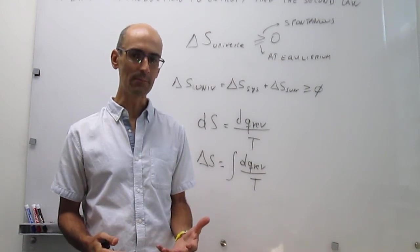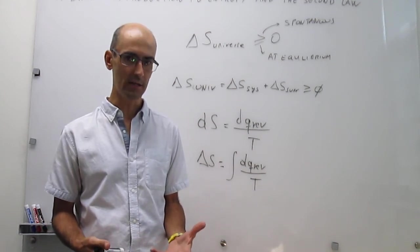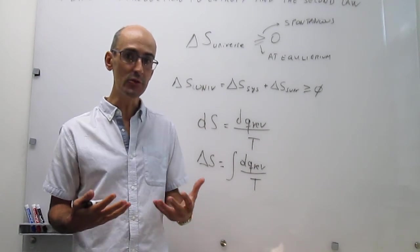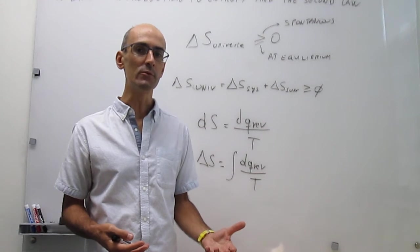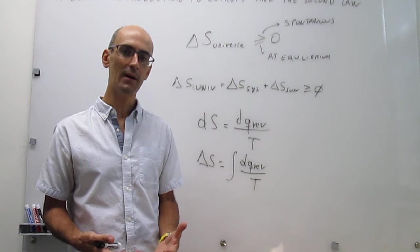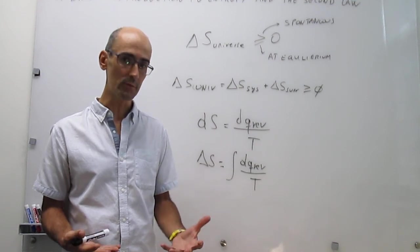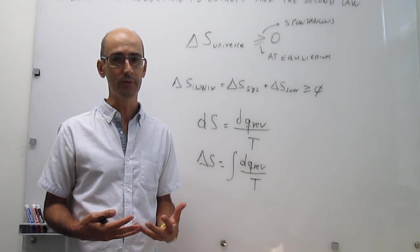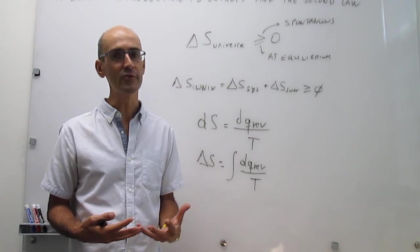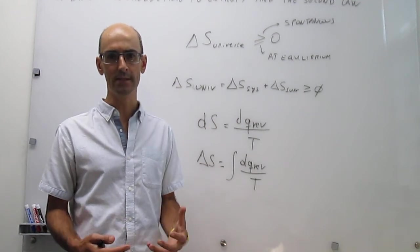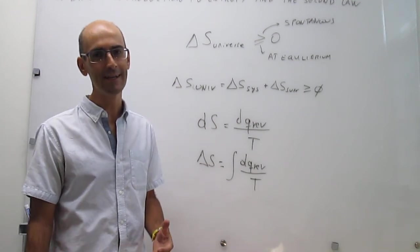So here's the gist of this introduction. All processes that take place in real life are spontaneous, and it turns out that there's a way to predict whether a process that you're thinking about will be spontaneous or not. And that is through use of the second law. The second law employs the concept of entropy, and entropy is kind of a measure of the natural tendency of energy and matter to disperse. So in the next videos we're going to see how this definition of entropy plays out in applied examples.